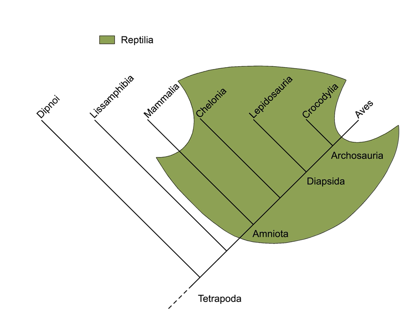Also, paraphyletic groups are involved in evolutionary transitions, such as the development of the first tetrapods from their ancestors. Any name given to these ancestors to distinguish them from tetrapods — fish, for example — necessarily picks out a paraphyletic group, because the descendant tetrapods are not included. The term evolutionary grade is sometimes used for paraphyletic groups.